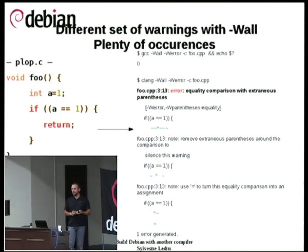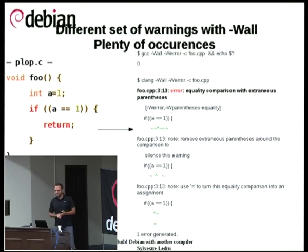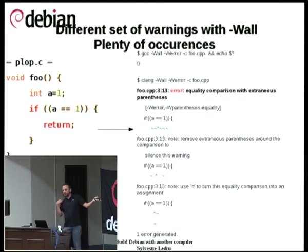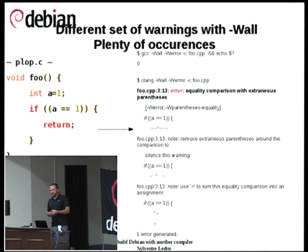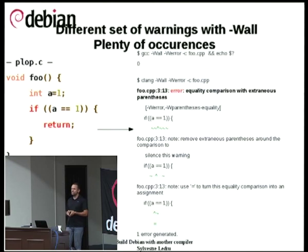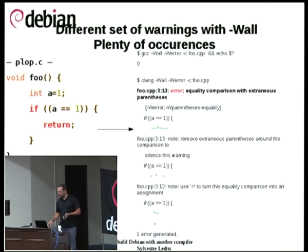Another issue: with -Wall in Clang, it triggers way more warnings than in GCC. This code is not wrong — it is simply that people from the LLVM and Clang community think we should not write this kind of code because the parentheses are useless in the conditional and it is confusing. When you enable -Wall and -Werror, it triggers an error. I am very surprised by the amount of packages in the archive using the -Werror flag — it is a huge number, causing a lot of failures in the rebuild.